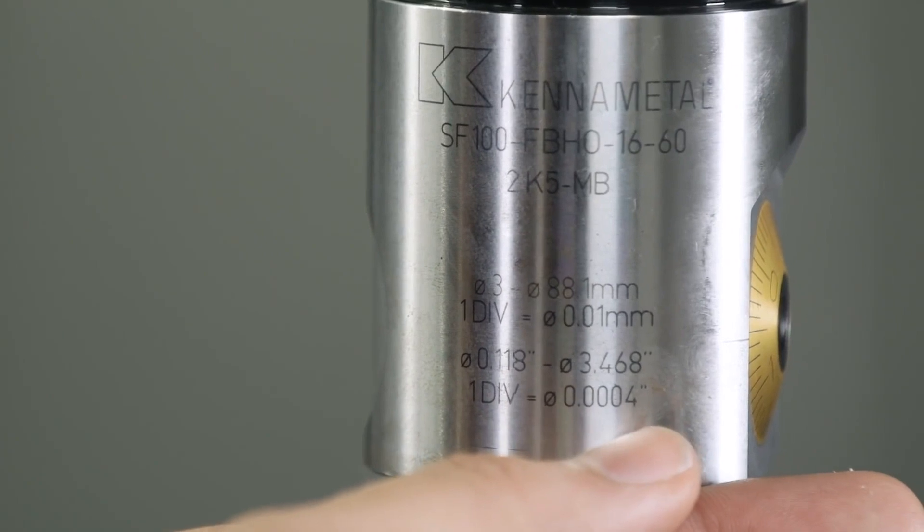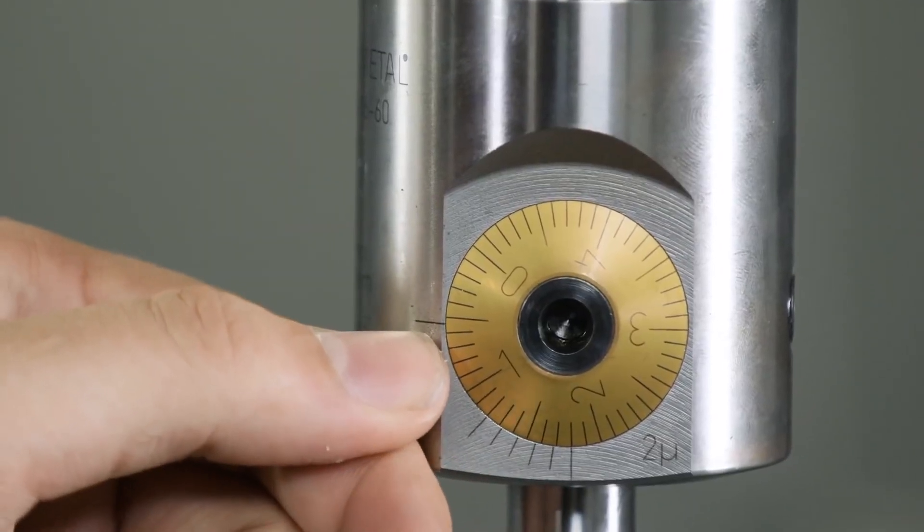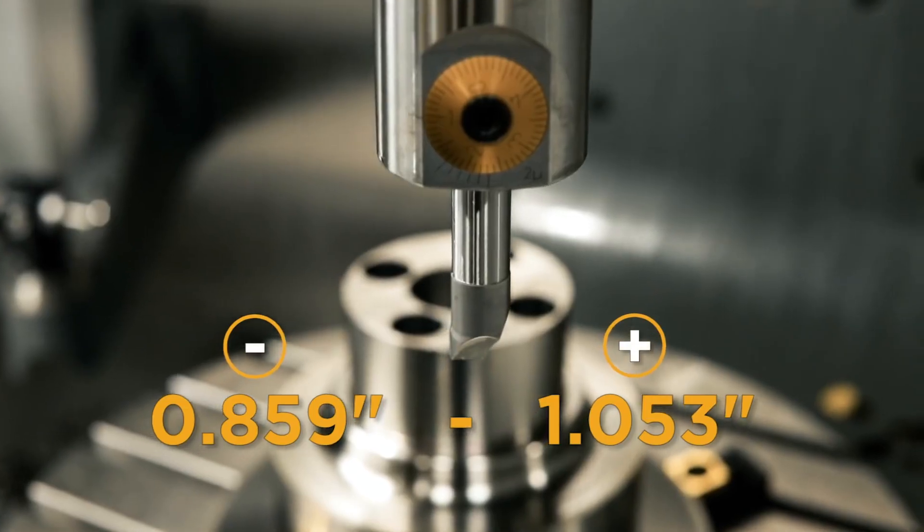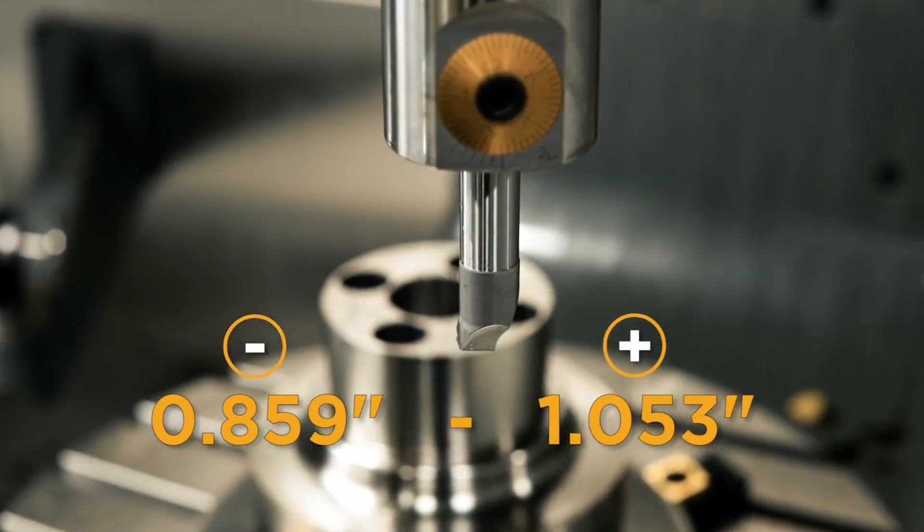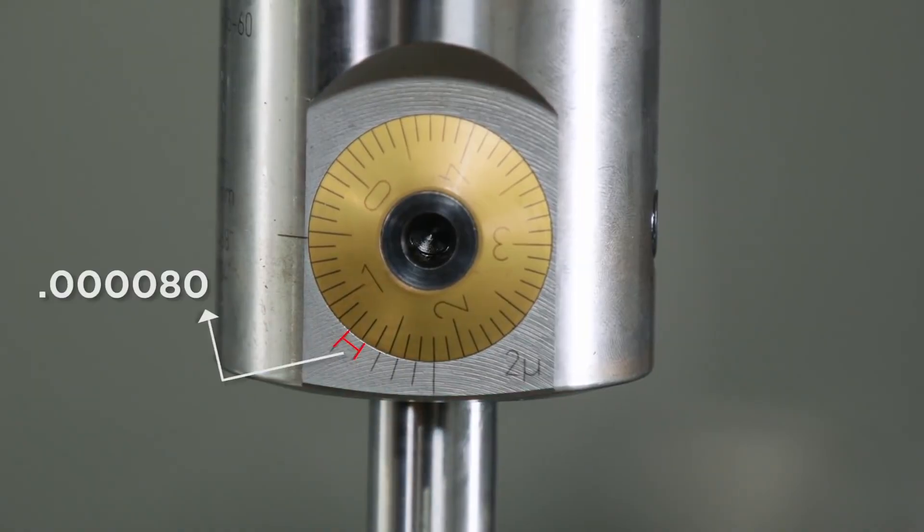There's also a pretty big price difference between these two types of tools. What makes boring heads worth the extra cost is that one boring head can replace many different sized reamers. Boring heads are often indexable so it'll be cheaper to replace an insert than to replace a solid carbide reamer.